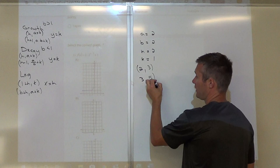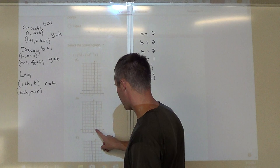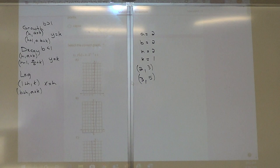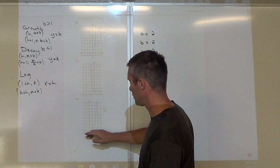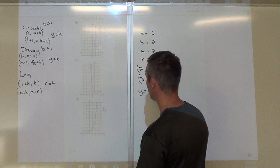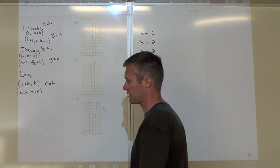I graph point (2, 3) and check the options — scrolling down to C and D. It has a horizontal asymptote at my K value, which is 1, so Y equals 1. I check over 2 up 3, and then (3, 5) — over 3, up 5 — and we have it. So D is the answer for number 1.